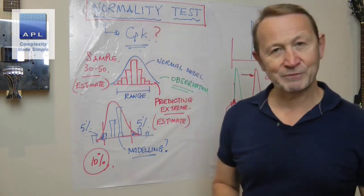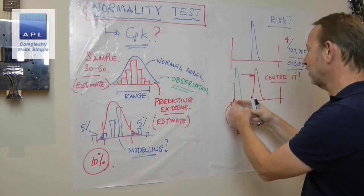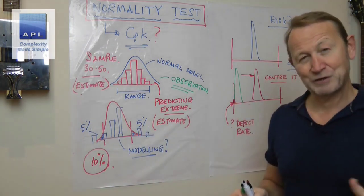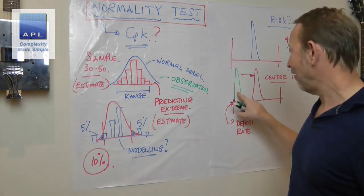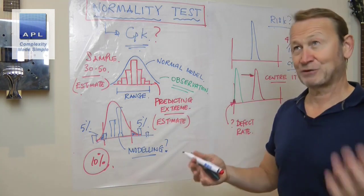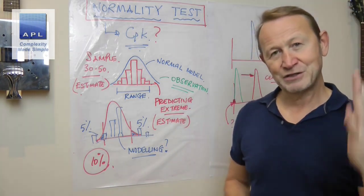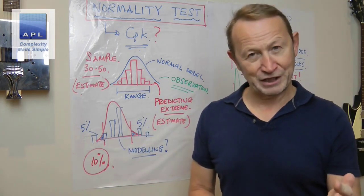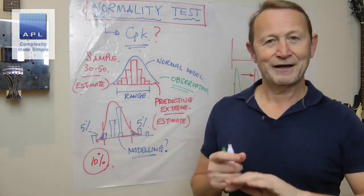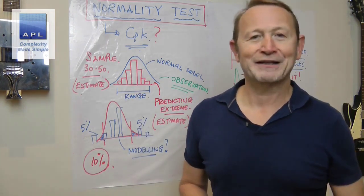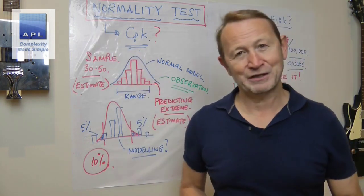Relax about normality. All it's trying to tell you is: can I rely on this prediction? Most of the time it doesn't change your decision - I have to fix this regardless. Doing a transformation to get normality would not change my decision. Don't over-complicate this. Keep your wits about you, look where the data's landing, look how much money it's costing you, and use the prediction and modeling to tell you what to do next. Keep it simple statistically, make brilliant decisions, and make a bucket load more cash without tying yourself in knots.